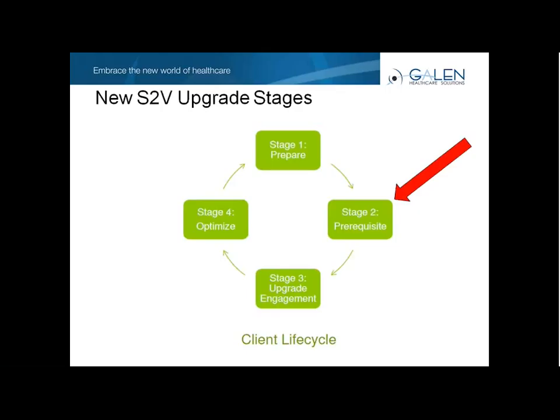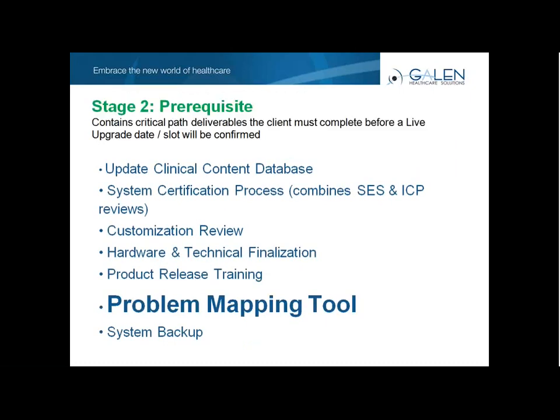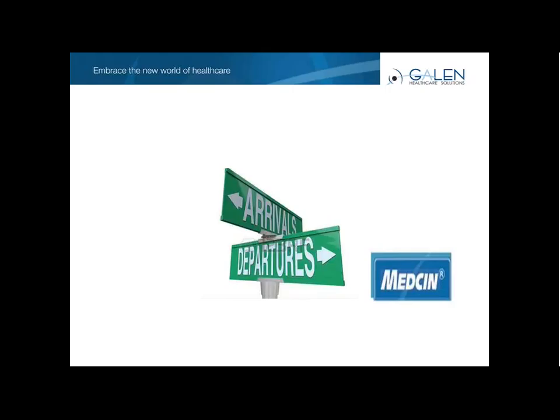As part of the prerequisite stage, there are certain deliverables that each client will need to perform before Allscripts will give you an upgrade date — before a slot can actually be confirmed. I've listed here a few of those items, but for our purposes today, we're going to be talking about the problem mapping tool. Why do you need this problem mapping tool? It's part of 11.4. There are certain areas of the enterprise product where medicine will no longer be used.